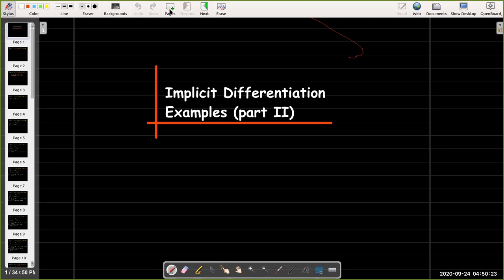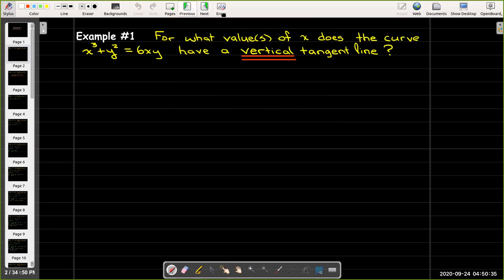In this video, what we want to do is work out a couple more examples using implicit differentiation. So our first example, and there's only two of them, but it's going to take a little bit of work on each one, is for what values of x does the curve x³ + y² = 6xy have a vertical tangent line?